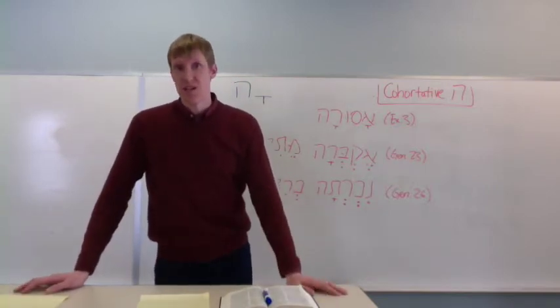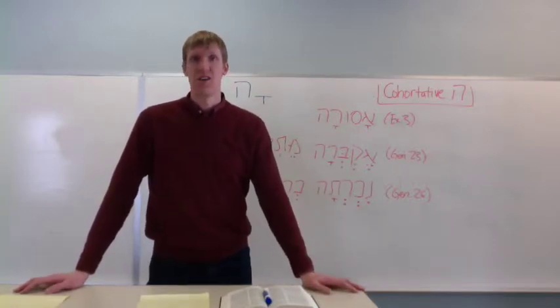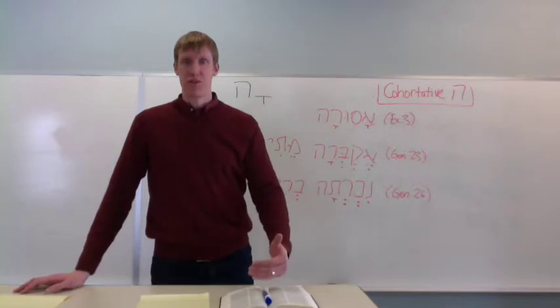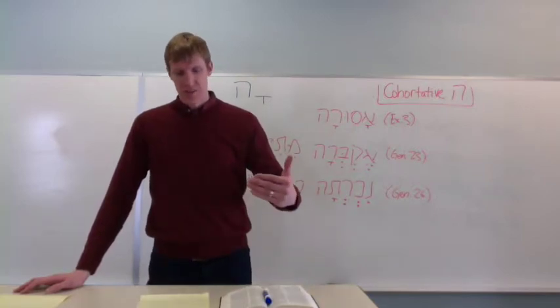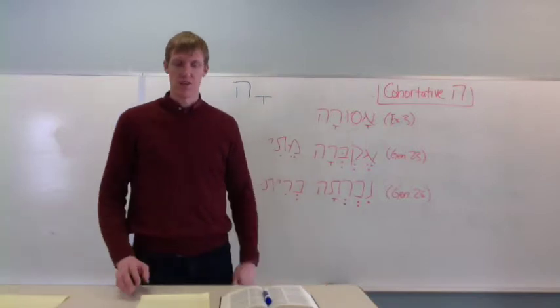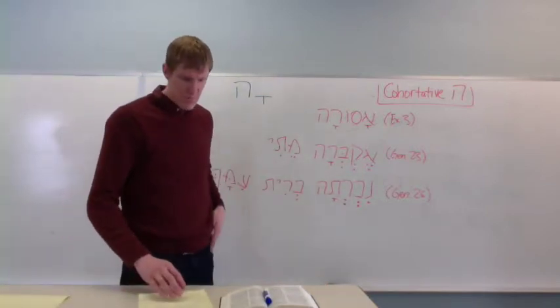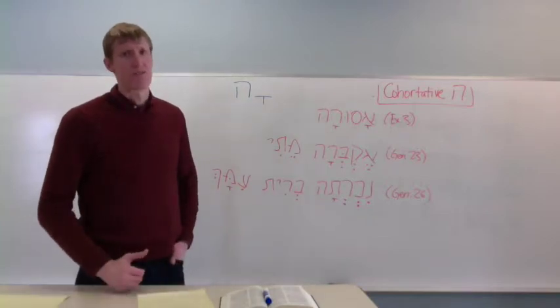On the canvas page, I've written a short example of a much more significant interpretive problem or interpretive dilemma created by the use of the cohortative in the story of the binding of Isaac. But I'll let you read it there. The point is that it requires interpretation.